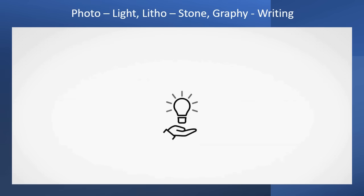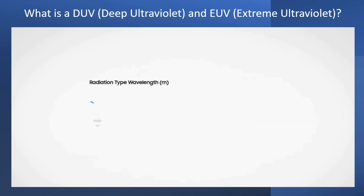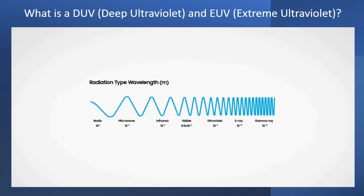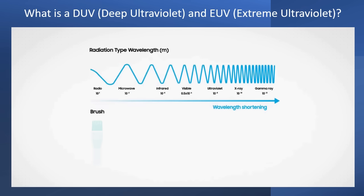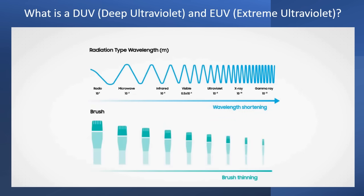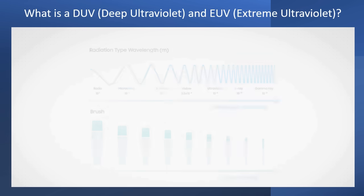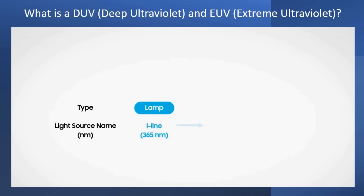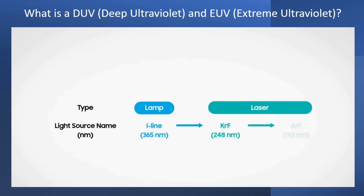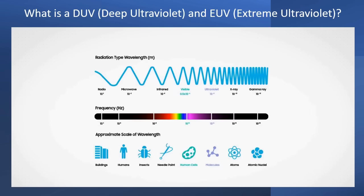We need a light source to print. The light source comes in different wavelengths and with different energy. The longer wavelengths are associated with lower frequency, meaning lower energy. Shorter wavelengths are associated with higher frequency, meaning higher energy. The light source is typically a high intensity lamp such as a mercury vapor lamp or an excimer laser, which emits light in a specific wavelength to print.